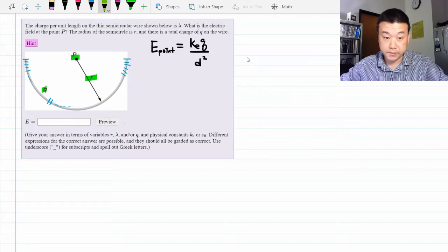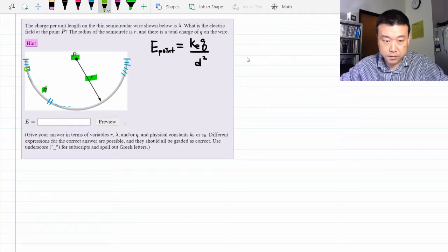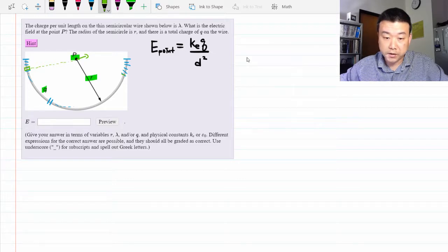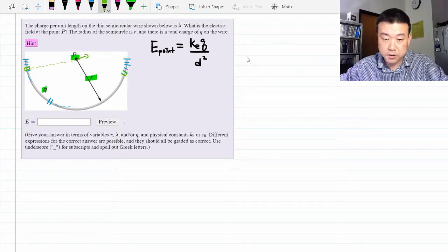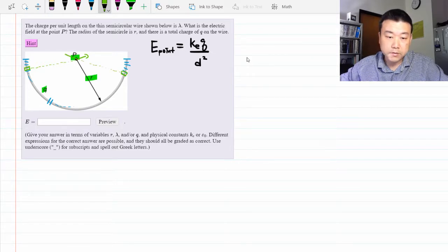Now I hope you are beginning to see what I mean by you have to worry about the directions. Electric field is a vector, which means the contribution to the electric field from this segment of the charge, pointing away this way, and the contribution to the electric field from this segment of the charge, pointing away this way